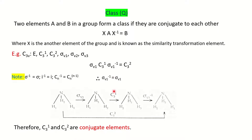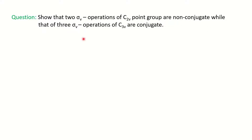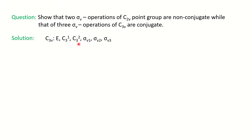I hope you understood what conjugate elements are and how they form a class. Now we will solve a problem from a previous MSc chemistry question paper: show that the two σV operations of C2V point group are non-conjugate, while the three σV operations of C3V are conjugate. First, we will take the example of C3V as we have just done, but now we will look at the σV operations.